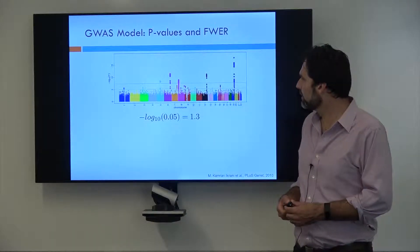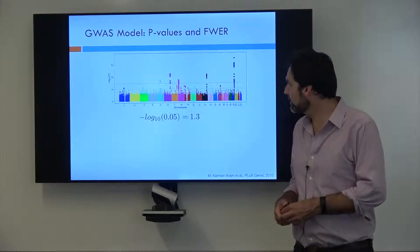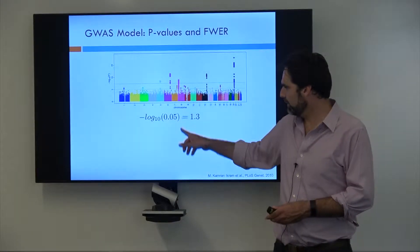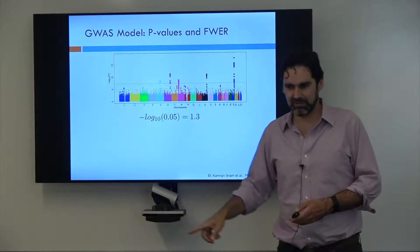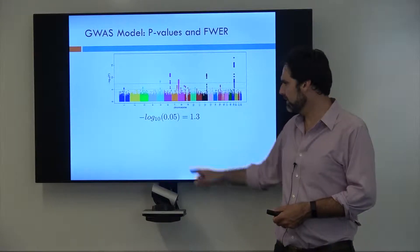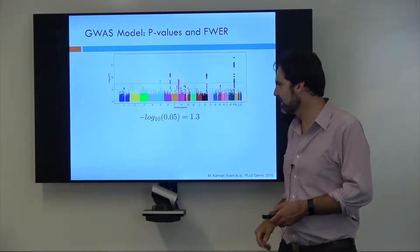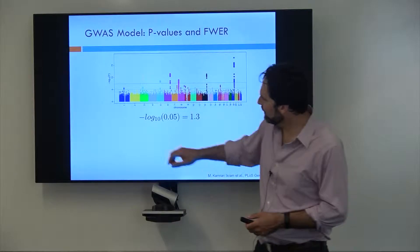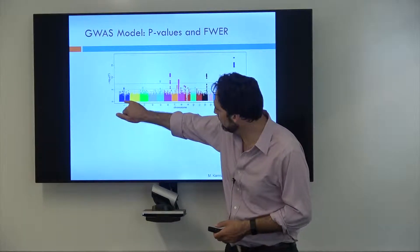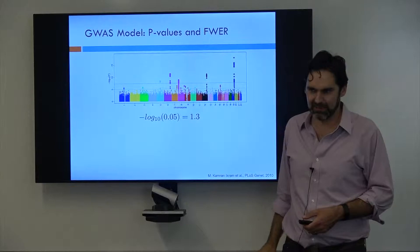So GWAS p-values and family-wise error rate. If you were to use a significance threshold of 0.05, if you take the negative log10 of that, you get 1.3. So 1.3 on this graph is right down here on this bottom line.